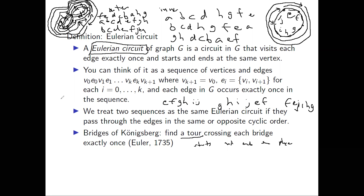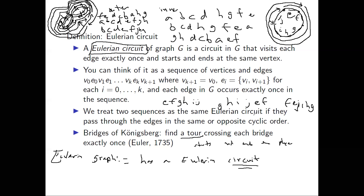A Eulerian graph simply means a graph that has a Eulerian circuit — it's not about Eulerian paths but specifically Eulerian circuits. That's why we're focusing on Eulerian circuits here: being a Eulerian graph requires having an Eulerian circuit.